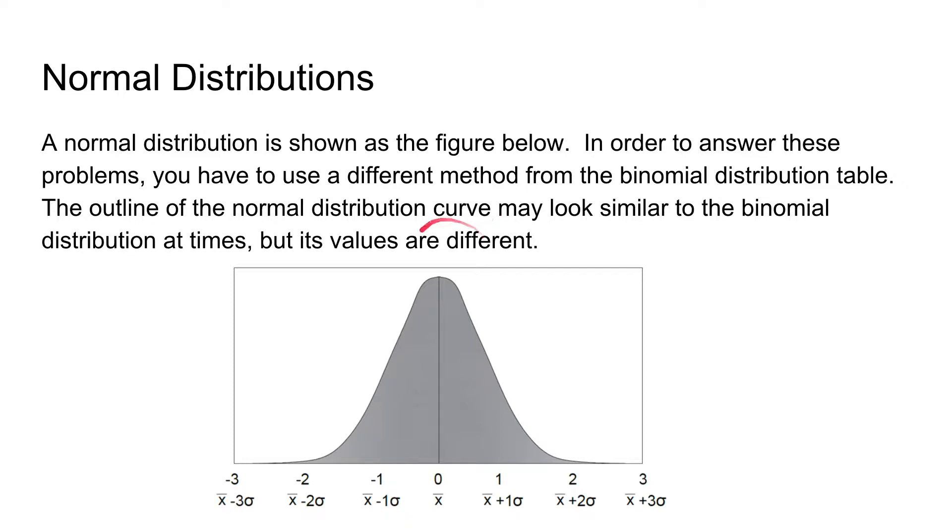So first off, the outline of the normal distribution curve is a Gaussian distribution. And it describes the percent of the population at a certain value relative to the average value. So the center of the curve describes the average value. And as you can see, the majority of the population as shown by a higher y value is at the average value.